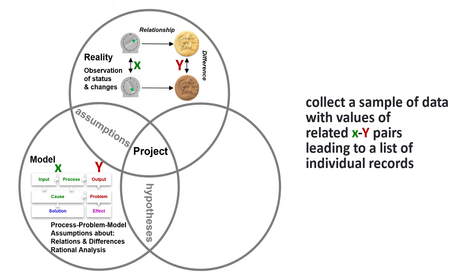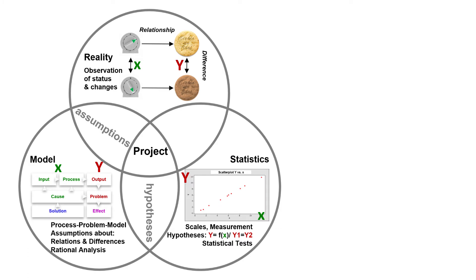Then we would collect data, not only for one cookie and its baking time and baking temperature, but for a whole sample. And if our observation is more than a random finding, then the assumed relationships and differences are confirmed by statistical tests.